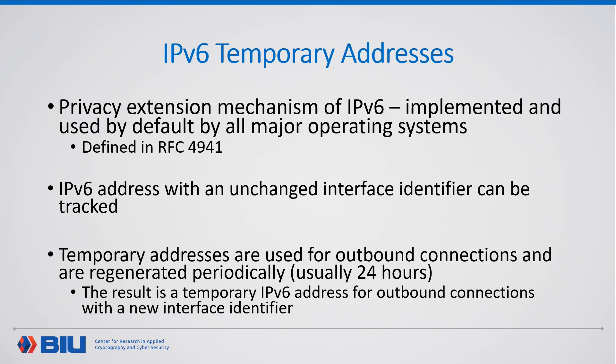The IPv6 temporary addresses. IPv6 has also introduced a privacy extension mechanism, which is implemented by all major operating systems. This mechanism's goal is to prevent tracking of users merely by their IPv6 address. In order to prevent such tracking methods, IPv6 has introduced something called a temporary address. This address is used for outbound traffic, such as internet connections. These temporary addresses are regenerated every certain interval, which is usually 24 hours, and it is done by generating a new random interface identifier.